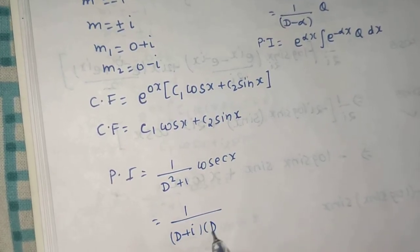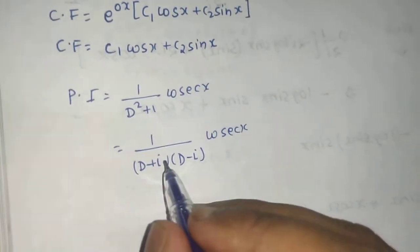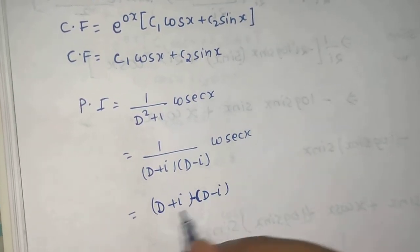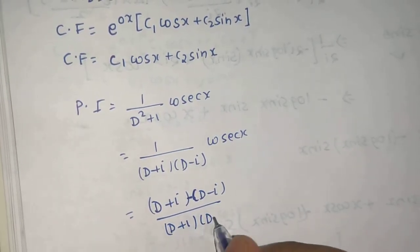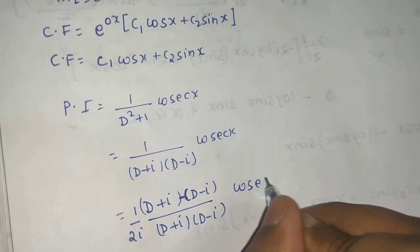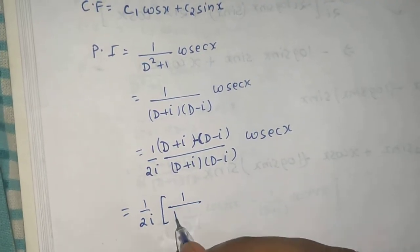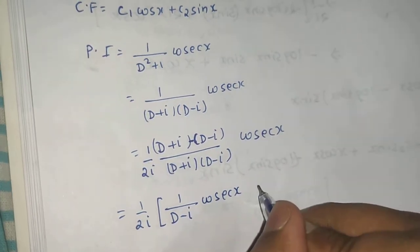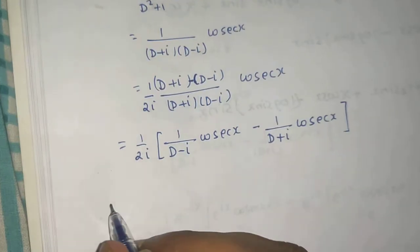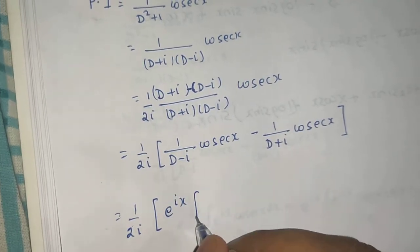We can write 1/(D² + 1) as 1/((D + i)(D - i)), since D² - i² = D² + 1. Using partial fractions, the numerator becomes (D + i) - (D - i) = 2i. So we divide by 2i, giving (1/2i)[1/(D - i) - 1/(D + i)] operating on cosec x. Applying the exponential shift formula: 1/(D - i) on cosec x becomes e^(ix) · ∫e^(-ix) cosec x dx.